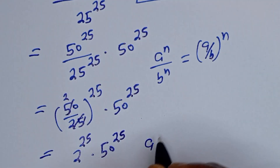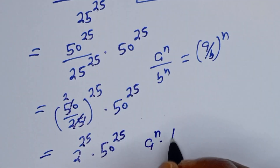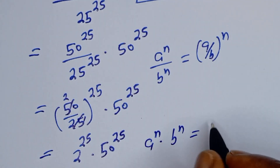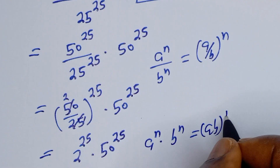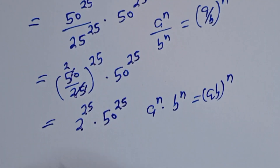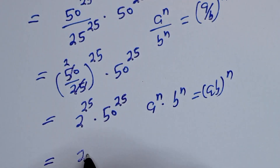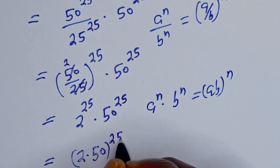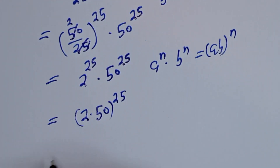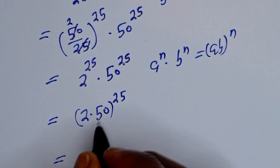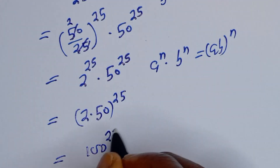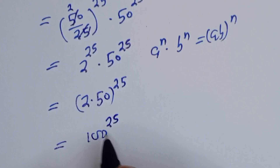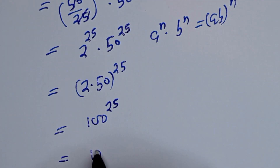If you have a to the power of n multiplied by b to the power of n, this is equal to a times b, to the power of n. Then this is equal to 2 multiplied by 50, to the power of 25. This is equal to 100 to the power of 25.